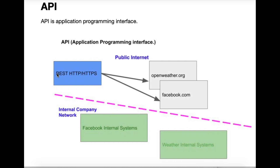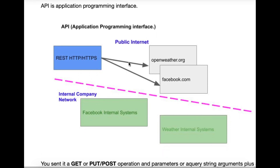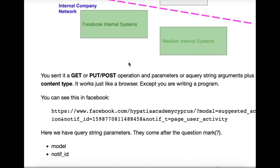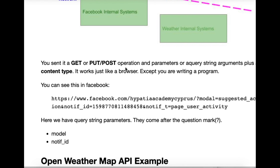For example, I could call OpenWeather and ask for the weather forecast. That interface is called REST. REST runs over HTTP or HTTPS — the S means secure, meaning it's encrypted. If you put HTTPS colon slash slash facebook.com, it's just that the traffic there is encrypted. That's all it means.